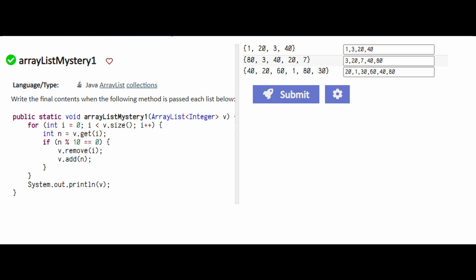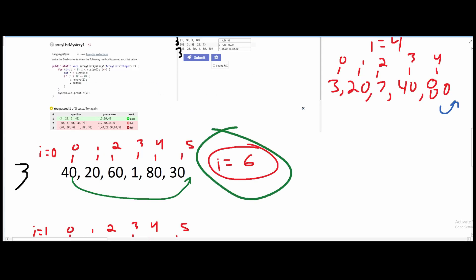The last array list is 40, 20, 60, 1, 80, 30. So our size is going to equal 6. This is our size.